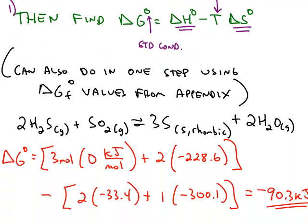Instead of calculating delta G that way, you have another way to do it, which is to do it in one step. If you have the full appendix, you can calculate delta G using delta G of the products times the coefficients minus the Gibbs energy of the reactants times their coefficients.